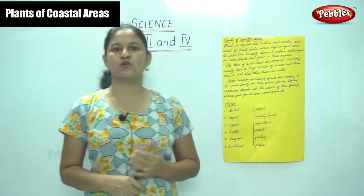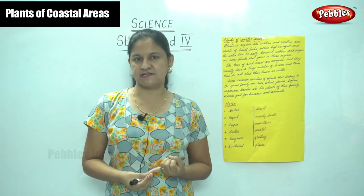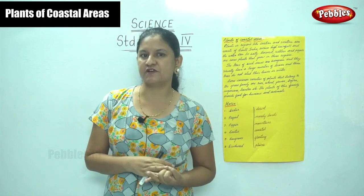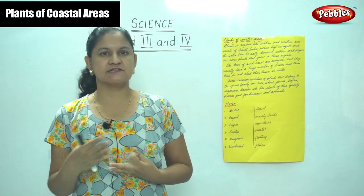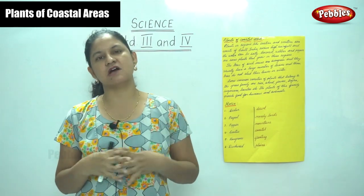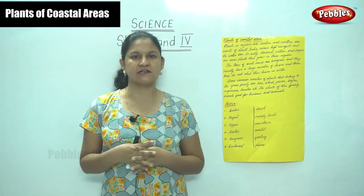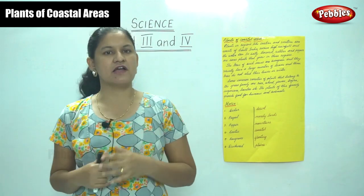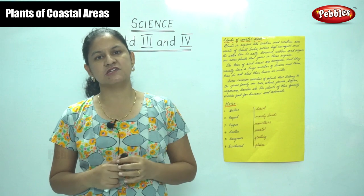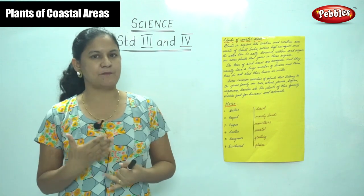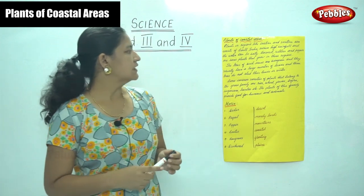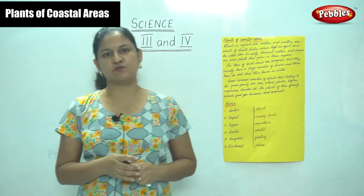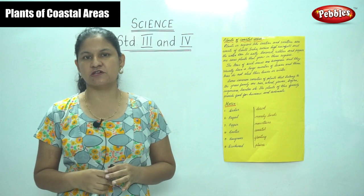So we have seen plants that grow in plains — your deciduous forest; plants that grow in hilly or mountainous regions — your coniferous trees; plants that grow in the desert — your cactus; plants that grow in marshy or swampy areas — your mangrove trees; and plants that grow in coastal areas that receive high rainfall and salty water, such as coconut, pepper, and rubber. The trees in these coastal areas are evergreen, do not shed their leaves in winter, and have numerous leaves.